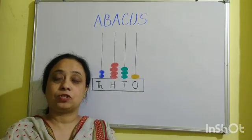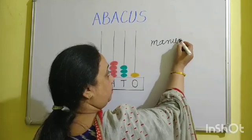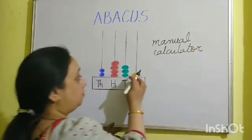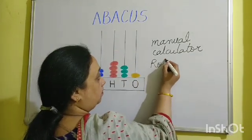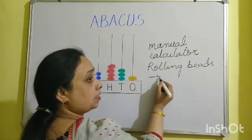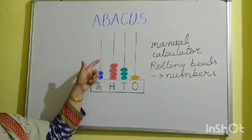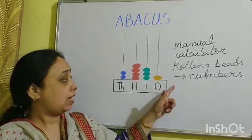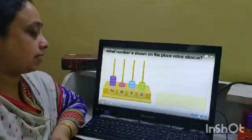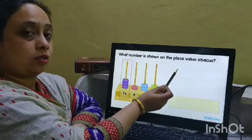Working place value through an abacus — first we should know what an abacus is. An abacus is a manual calculator which has rolling beads which represent numbers. The rows of beads represent the digits in different numbers. They have the place values: ones, tens, hundreds, and thousands. Let us understand the place value through the abacus. We have thousands, hundreds, tens, and ones. What number is shown on the place value abacus?